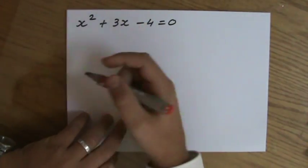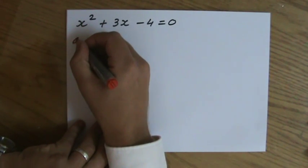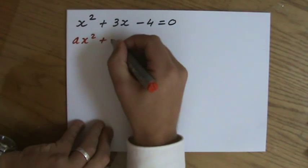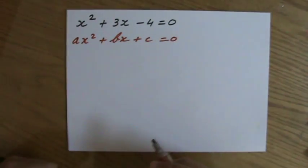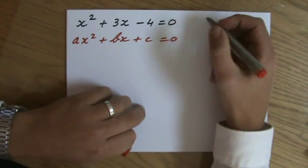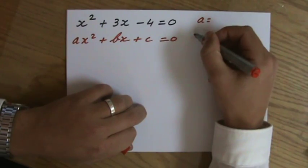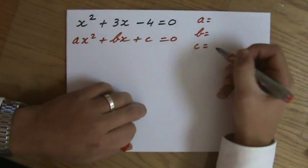But no problem there. Then I said, well, in general we say ax squared plus bx plus c equals 0, because you've got to identify what the values of your a, b, and c are.